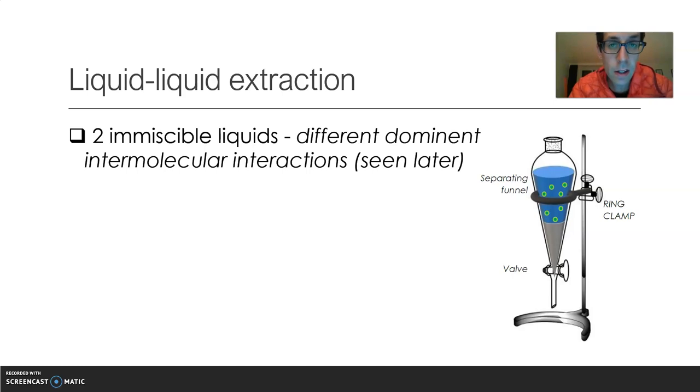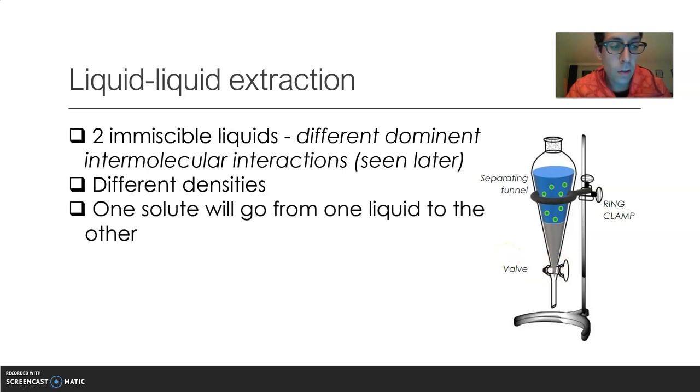And what happens here is that there are two immiscible solvents in this flask here, and they are immiscible because they don't share the same dominant intermolecular interaction. This is a big topic we're going to cover in class, but we will see that later. Of course they have different densities, so the top layer because its density is lighter is floating on top of the one having the highest density.